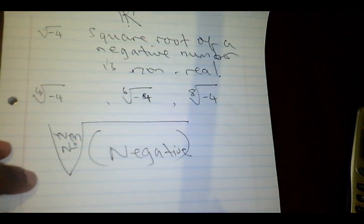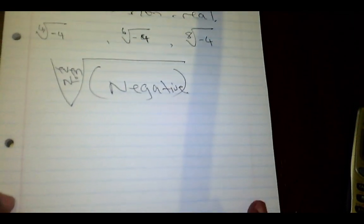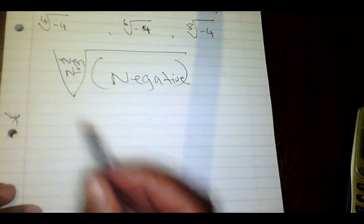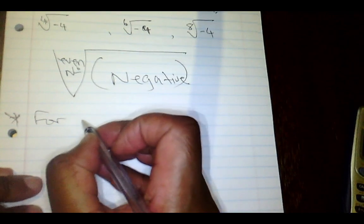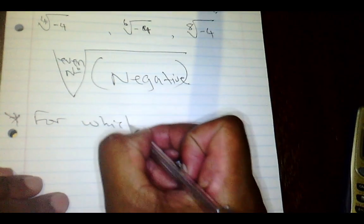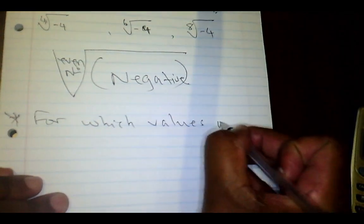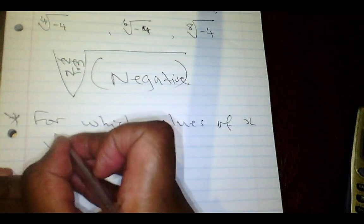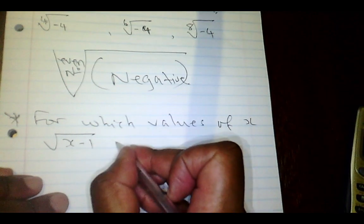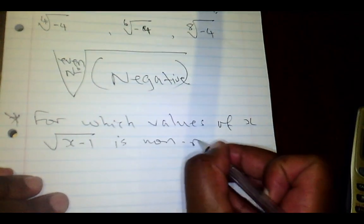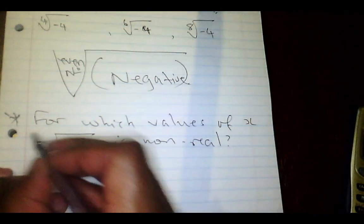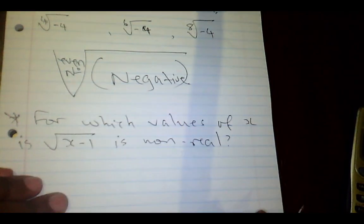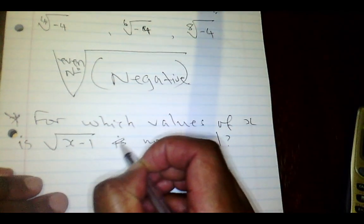Please learn to identify non-real numbers. Now let's apply that knowledge. We want to determine for which values of x the expression — the square root of (x minus 1) — will be non-real.